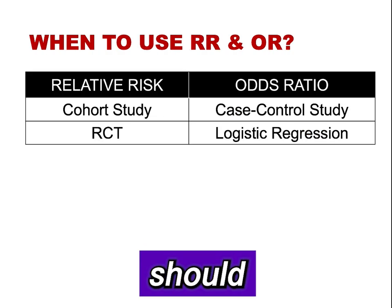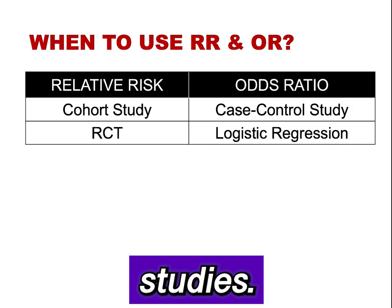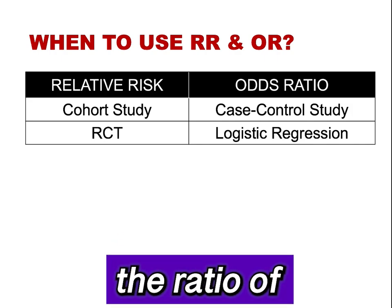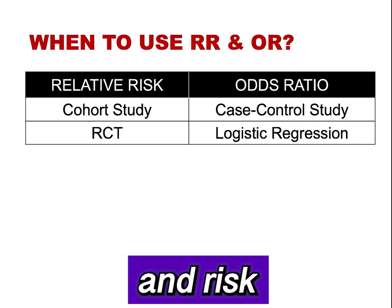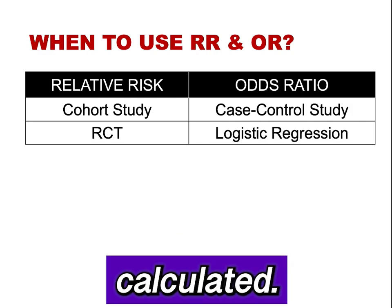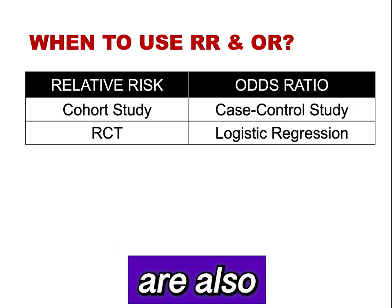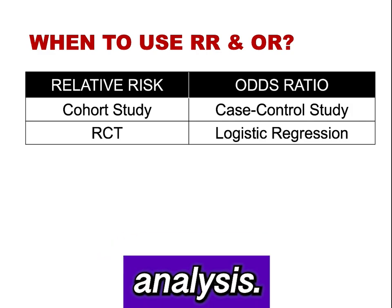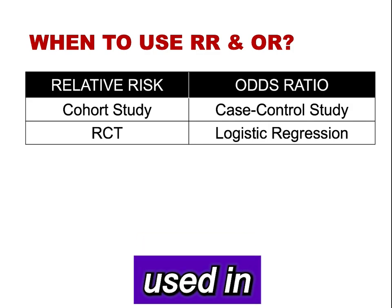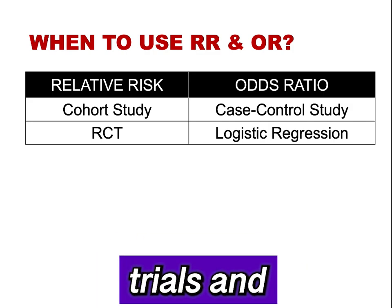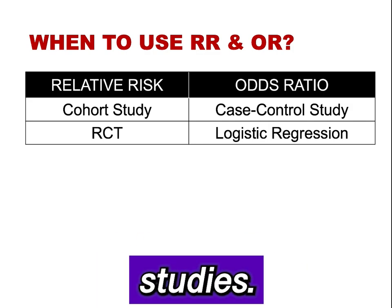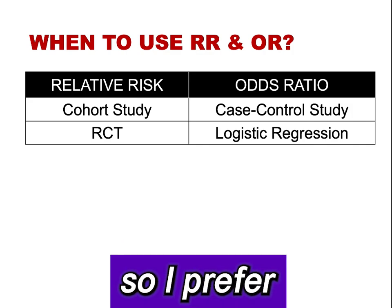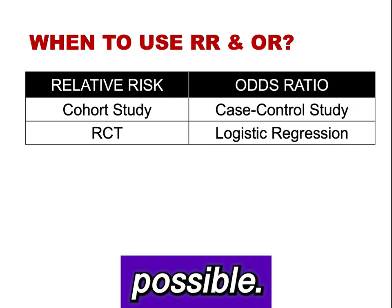Odds ratios should be used for case-control studies. In case-control studies, the investigator determines the ratio of cases to controls and risk should not be calculated. Odds ratios are also the product of logistic regression analysis. Relative risk is typically used in randomized clinical trials and cohort studies. I find that odds are difficult to wrap my head around, so I prefer relative risk whenever possible.